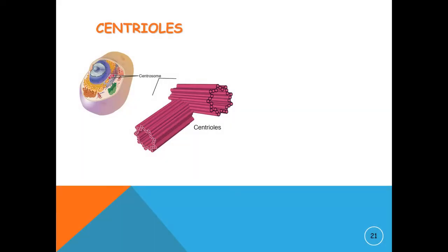Centrioles are one of a pair of cellular organelles that occur especially in animals, are found near the nucleus, function in the formation of the spindle apparatus during cell division, and consist of a cylinder with nine microtubules arranged peripherally in a circle.